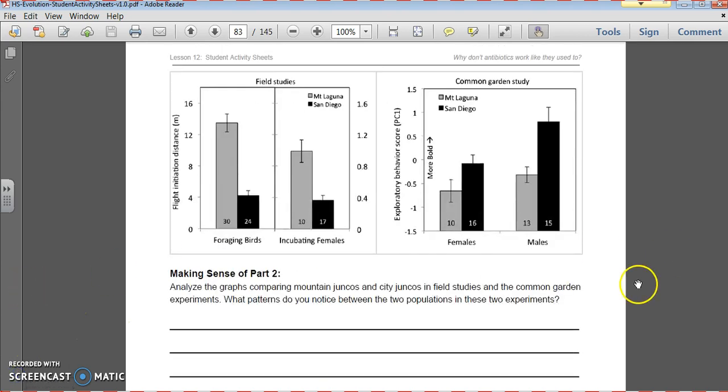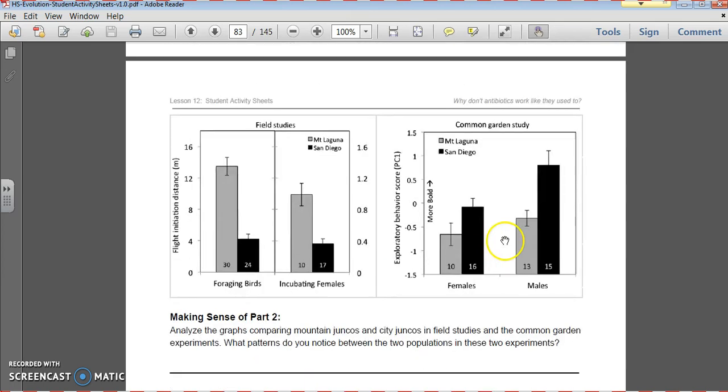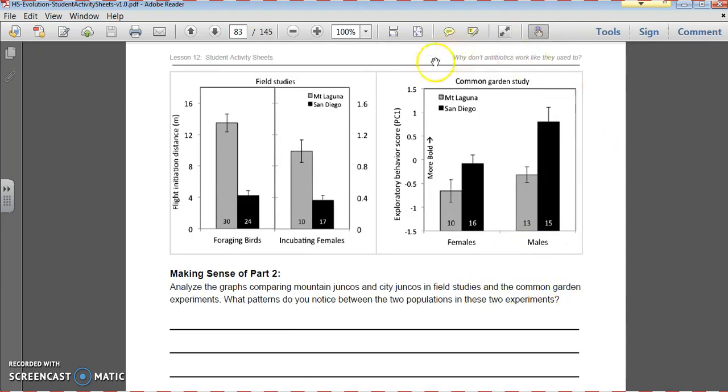Now here's the fun part. So earlier in this activity, what you did was you made a prediction. You predicted, are these differences in behavior between the populations inherited or learned? General consensus was that they are learned. What I'm going to have you do now is you can either look at it right on your screen or you can pop open your student activity sheets. On the right side are the results of the common garden study. On the left are the results that we already saw. You can find these on a previous video or in a handout that I gave you. What we already saw was that the UCSD campus birds, which are indicated by the black columns, will let you get way closer, almost three times closer, before they fly away. The Mount Laguna birds won't let you get anywhere near as close. They will fly away at about 13 meters.